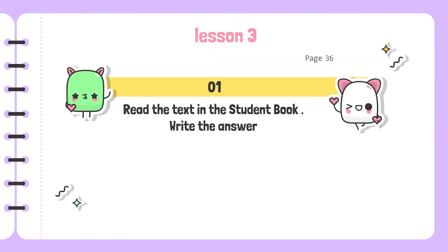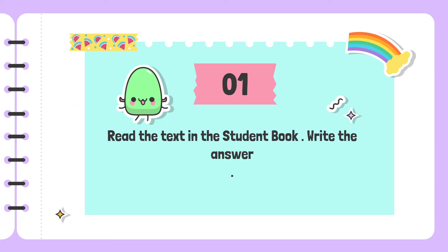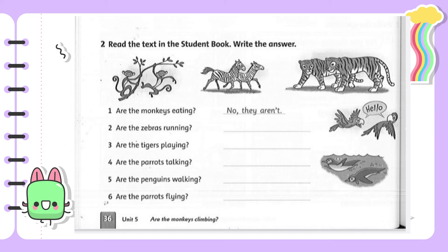Now continue to lesson three. Open your book, page 36. There is only one exercise — exercise one: read the text in the student book and write the answer. You look back at the song we learned and answer yes or no for each sentence. Example — number one: 'Are the monkeys eating?' The monkeys are not eating in the song, so the answer is: 'No, they aren't.' Number two: 'Are the zebras running?' — 'Yes, they are.'